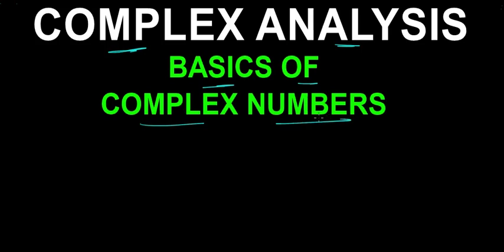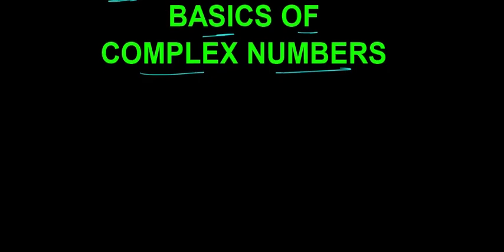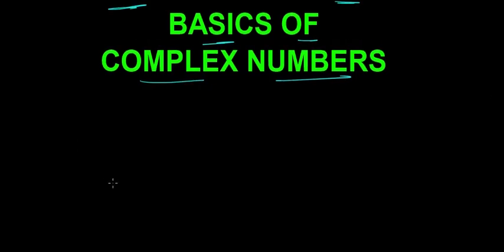So you might ask: what are complex numbers? Normally, complex numbers are represented by z and they have the form of x plus iota y.